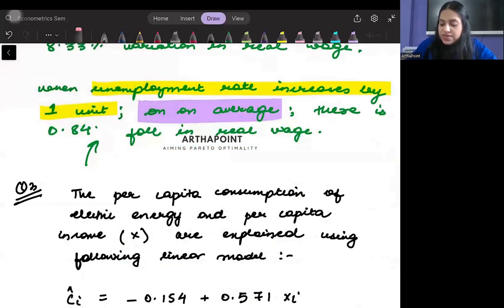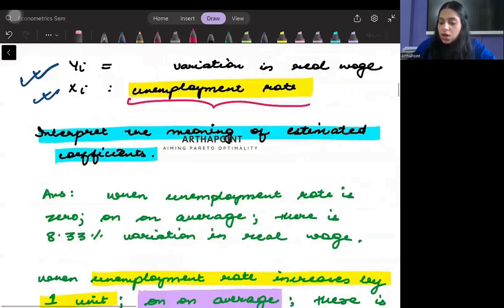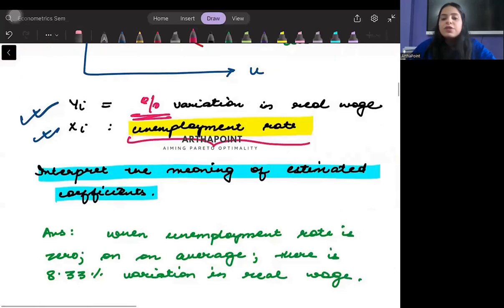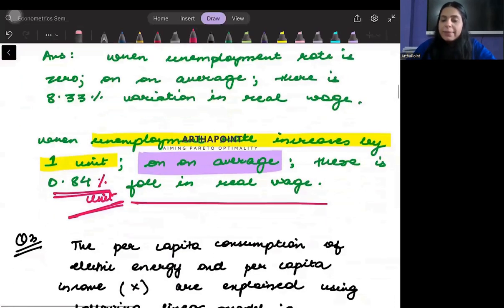Otherwise if they would have just said variation in real wage and they wouldn't have used percentage, then here I would have said that 0.84 unit fall in the real wage. I am being able to use the word percentage here because in the question itself I am given the term percentage. Am I clear with it?